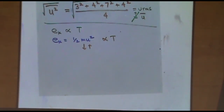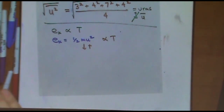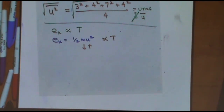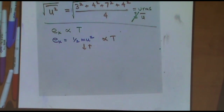Now let's compare and contrast ideal versus real gases. For ideal gases, you want to know these five assumptions: they're tiny and don't take up volume; they move in straight lines randomly in random directions, so they diffuse or effuse; there's no attraction or forces between the gas molecules; elastic collisions; and the kinetic energy is proportional to temperature.